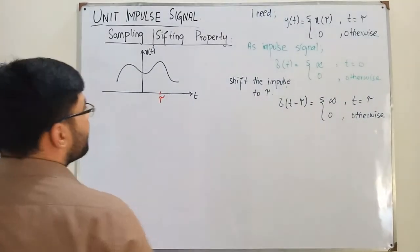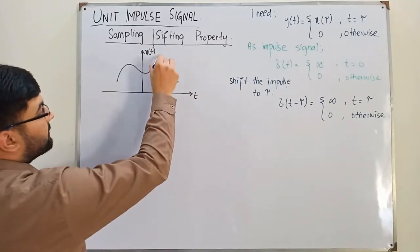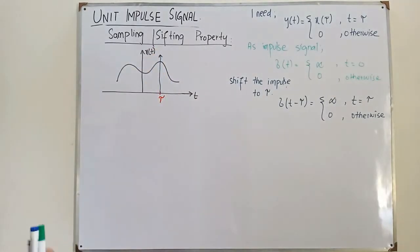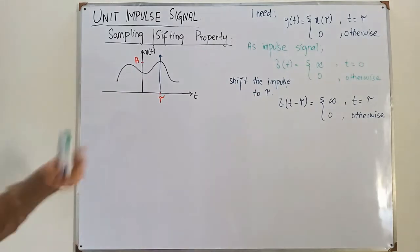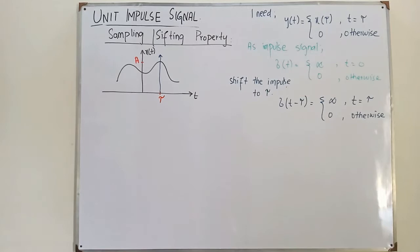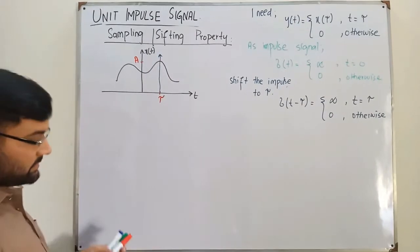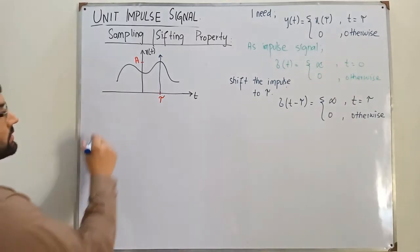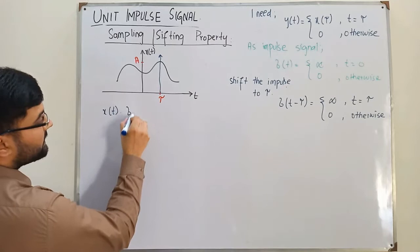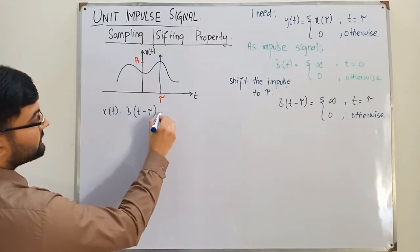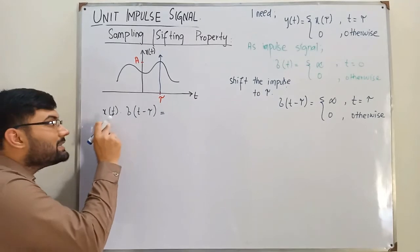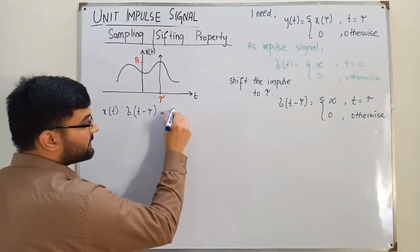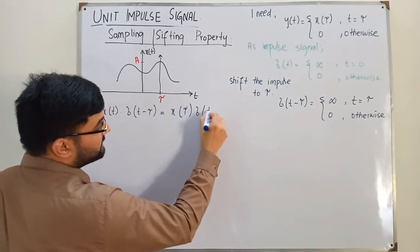I have now brought my impulse signal to this particular point. The blue color represents the impulse, and the value of x of t at tau is, let's say, a. Now if I multiply these two signals — x of t multiplied with delta of t minus tau — this is equivalent to taking the value of x of t at that point, which means x of tau. So we can write it as x of tau multiplied by delta of t minus tau.